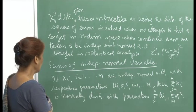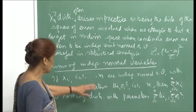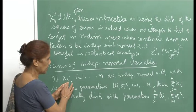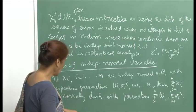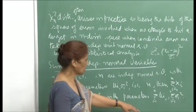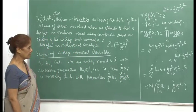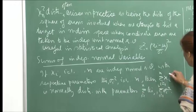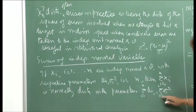If X1, X2, ..., Xn are independent normal random variables with respective parameters μi and σi², then their sum Σ Xi is again normally distributed with mean Σ μi and variance Σ σi². We already know the mean and variance results, but the important thing to show is that the sum is again normally distributed.